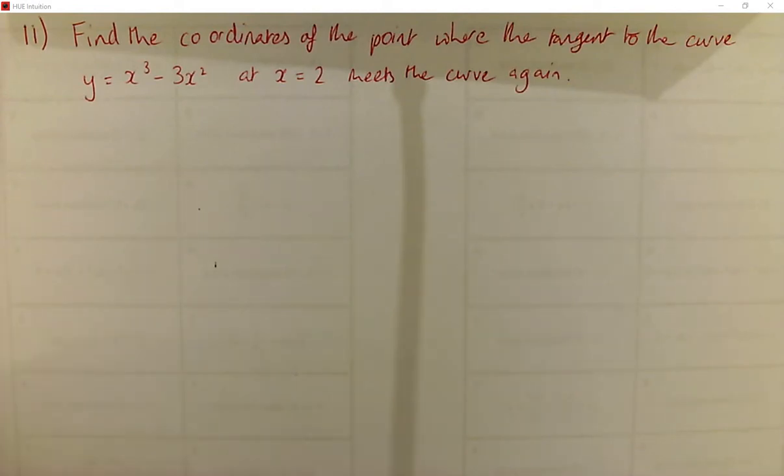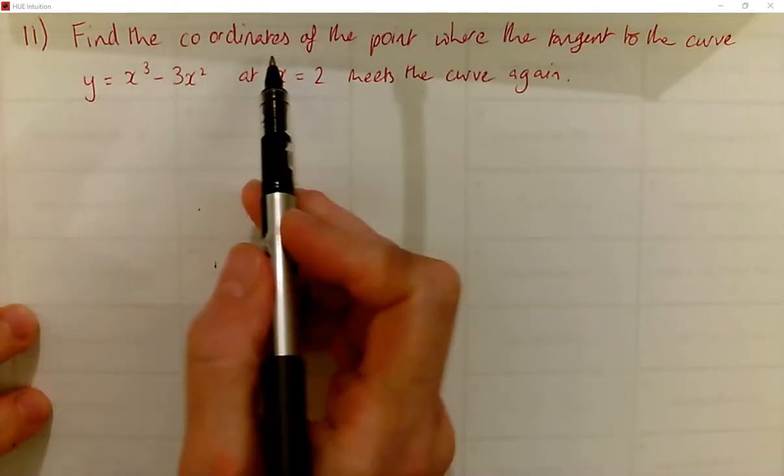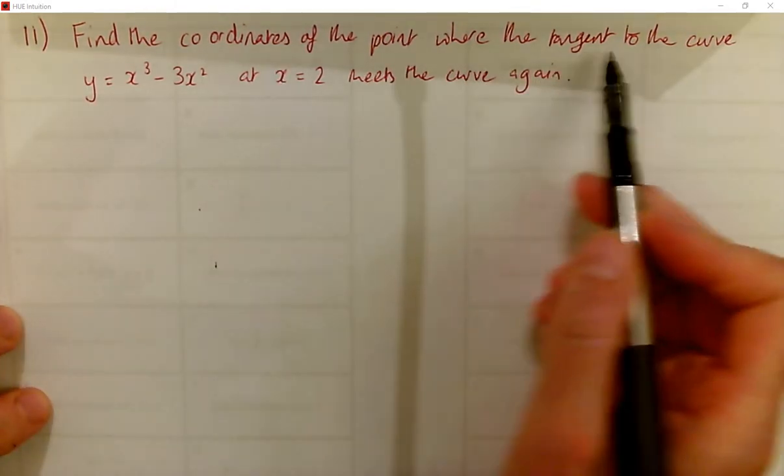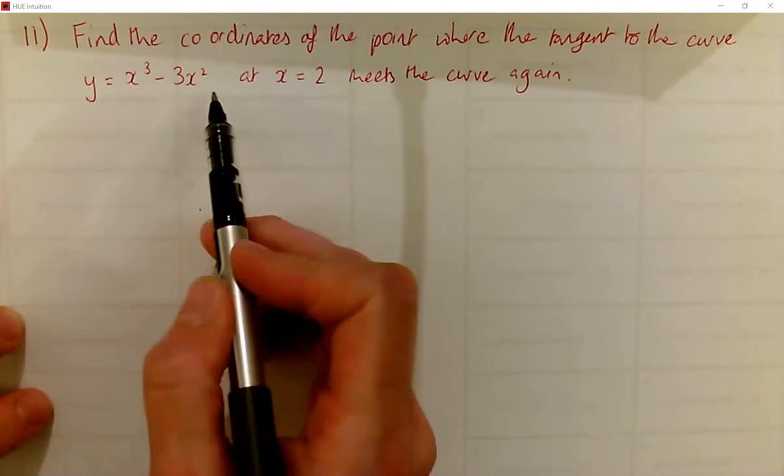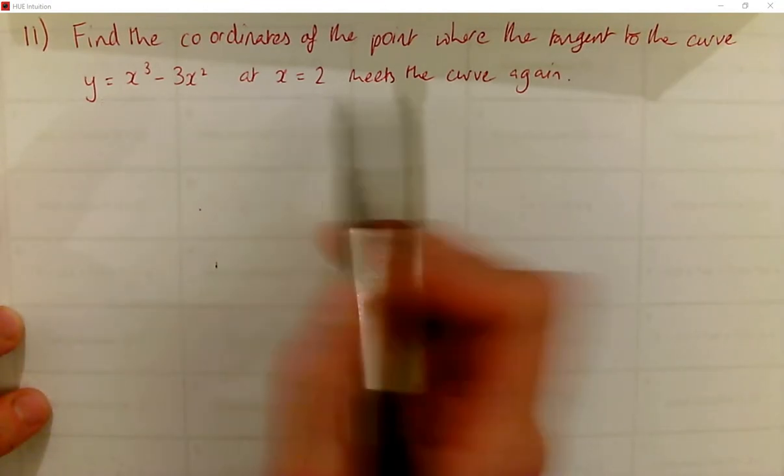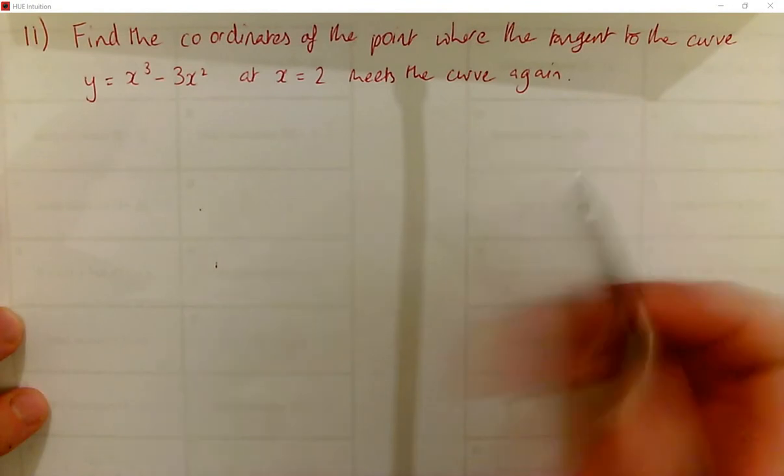Hi, you're 12. This is question 11 from exercise 14a on tangents and normals. We're asked to find the coordinates of the point where the tangent to the curve, this cubic, at this point meets the curve again.